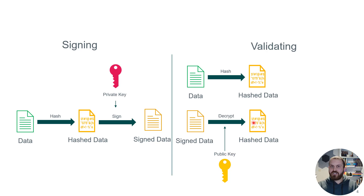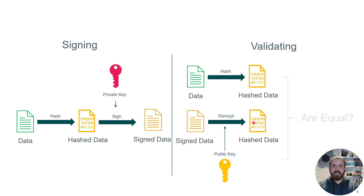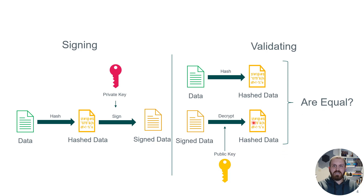Now I have a hash that belongs to the signature and a hash that belongs to the message I received. If they are equal to each other, I can say this message has not been manipulated. But if the result of this comparison is false, that means someone manipulated the data.